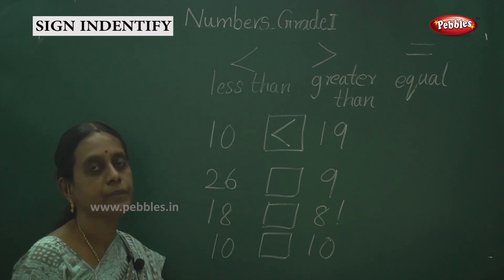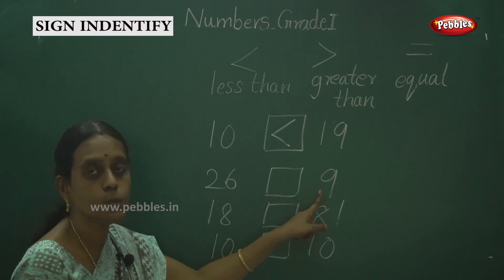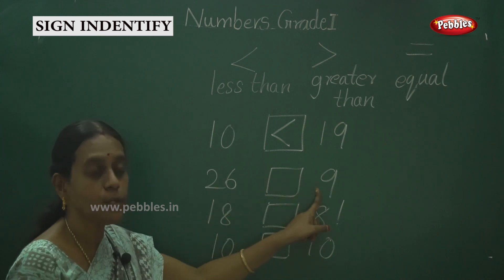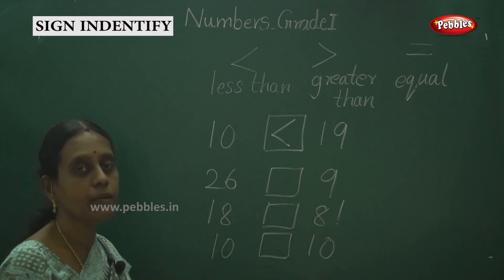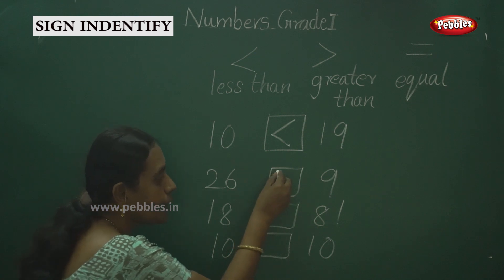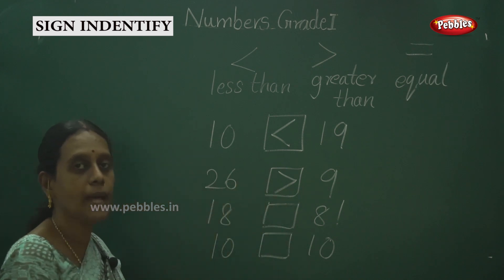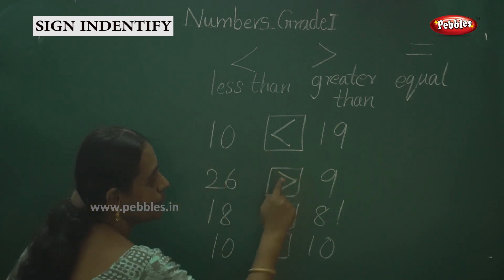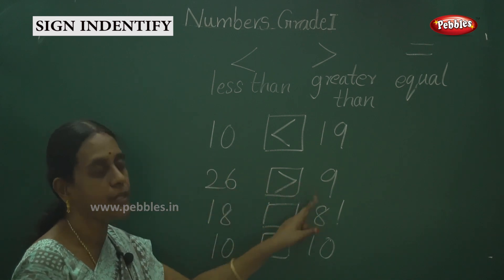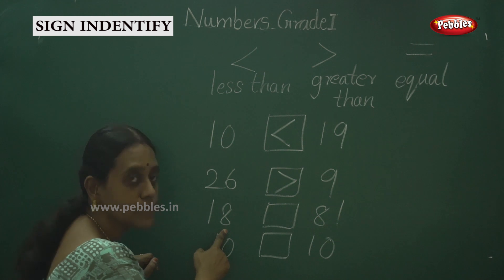Since 19 is bigger than 10, the open side faces 19. That is the correct sign. Now this number is 26 and this one is nine. One basket has 26 roses and another has nine roses. The arrow's open side points toward the bigger number — open side toward 26. So 26 is greater than nine.